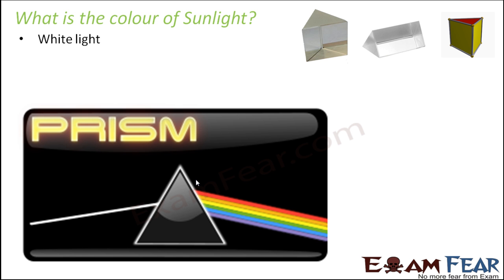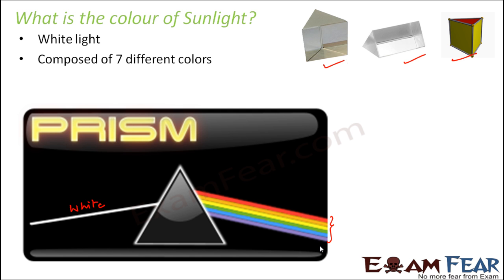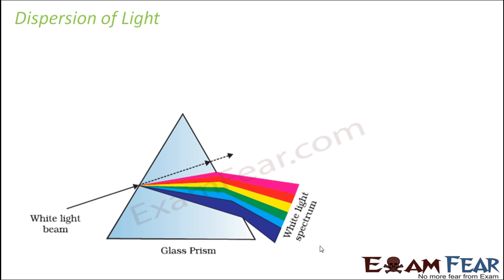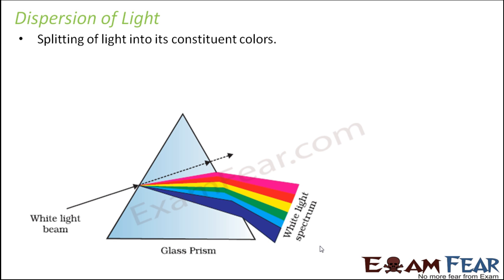If you take a prism and make sunlight pass through it, the sunlight which normally looks white splits into seven different colors. This shows that sunlight is composed of seven different colors. Here we encounter another property of light called dispersion. Disperse means to spread away — it is the splitting of light into its constituent colors. When you pass white light through a prism, it gets spread into its constituent colors, and this process is known as dispersion.